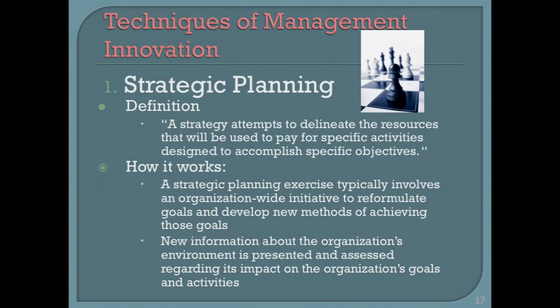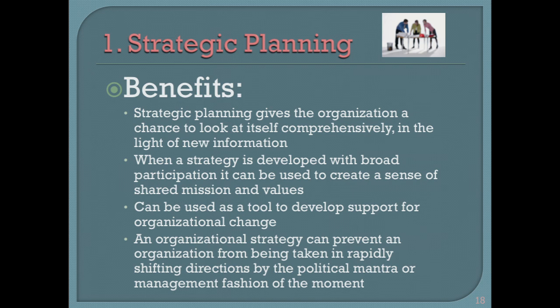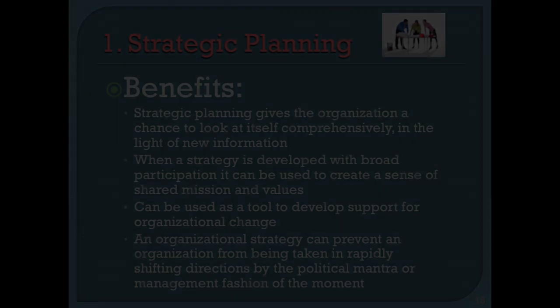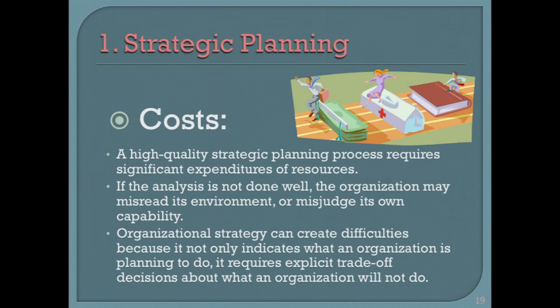Let me go through a bunch of these innovation tools. Starting with strategic planning: a strategy delineates the resources used to pay for specific activities designed to accomplish specific objectives — resources, activities, objectives. You start the organization thinking about who we are, what we do, and what goals we need to generate resources. Strategic planning requires an organization to look at itself top down. It can help build a sense of identity and mission, and it can keep an organization from rapidly moving from one side to the next depending on the priorities of the moment. The cost is that it takes a lot of time and resources.